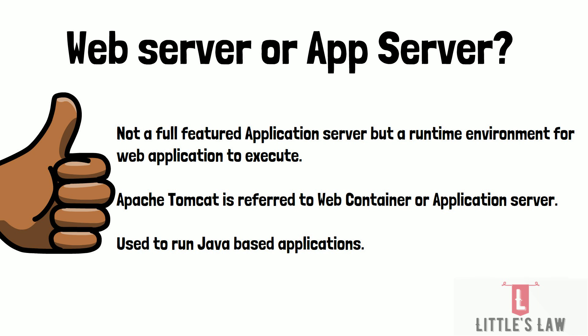While Apache Tomcat can run some types of Java-based applications, it is not designed to support the full range of features provided by a full-featured application server. For example, it does not provide support for Enterprise Java Beans (EJBs) or other advanced Java enterprise features. If you need a full-featured application server, you might consider Oracle WebLogic, IBM WebSphere, or Red Hat JBoss, which provide a more comprehensive set of features for enterprise-grade Java applications. With that, we come to an end — I hope this video was useful. Until next time, bye-bye from Shanmugam and Little Sly.